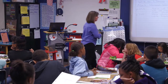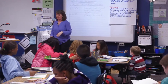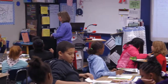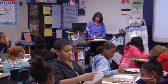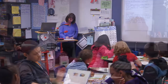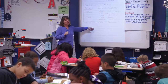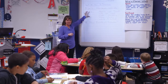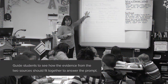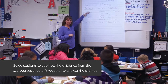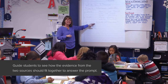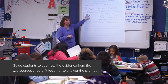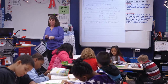Now let's go to A New Birth of Freedom. I'm going to skip a line and write my new source. I want you to go back and find what is something that you learned here that was not in this text. Mrs. Reed guides students to see how the evidence from the two sources should fit together to answer the prompt. We've told what we've learned in the first text. What did you learn that's different or that you can add to from the first one?